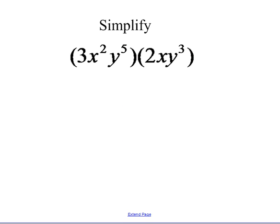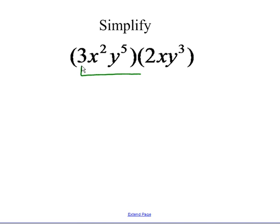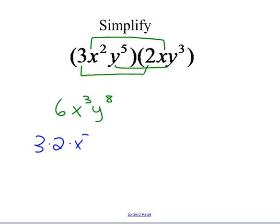For a slightly trickier problem, we have some parentheses with various terms, but there's no adding, so the parentheses don't matter. We just multiply the things that are alike. So 3 times 2 gives me 6; x squared times x gives me x to the third; and y to the fifth times y cubed gives me y to the eighth. You can change the order and group using the associative and commutative properties of multiplication.